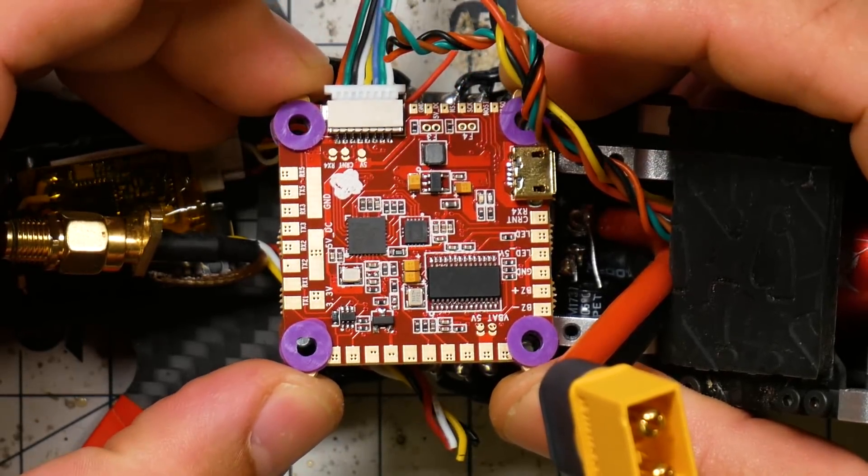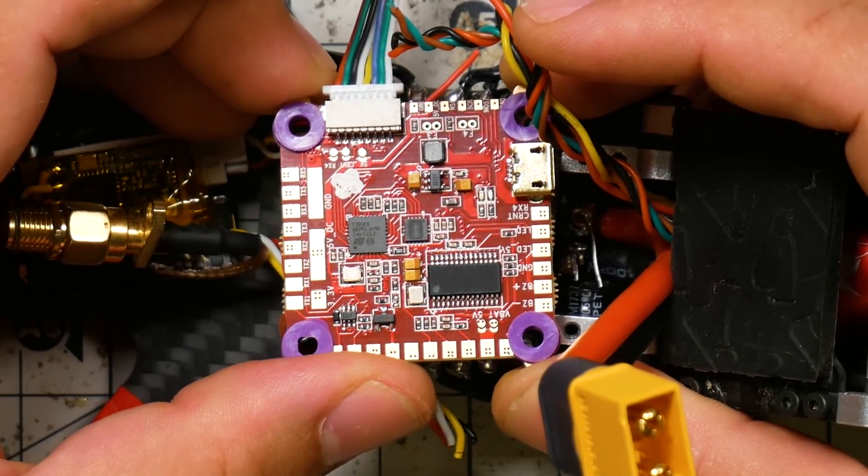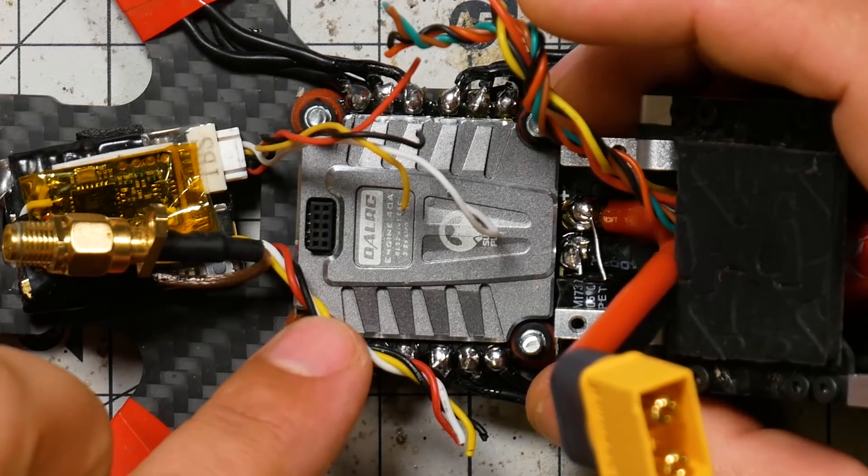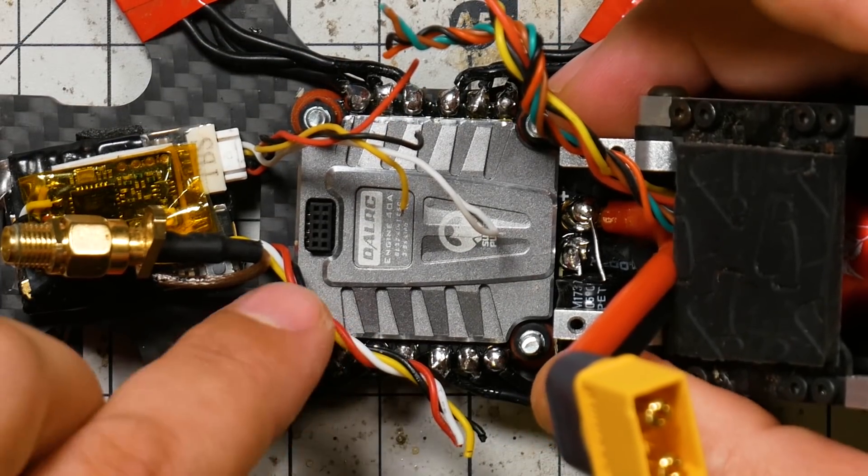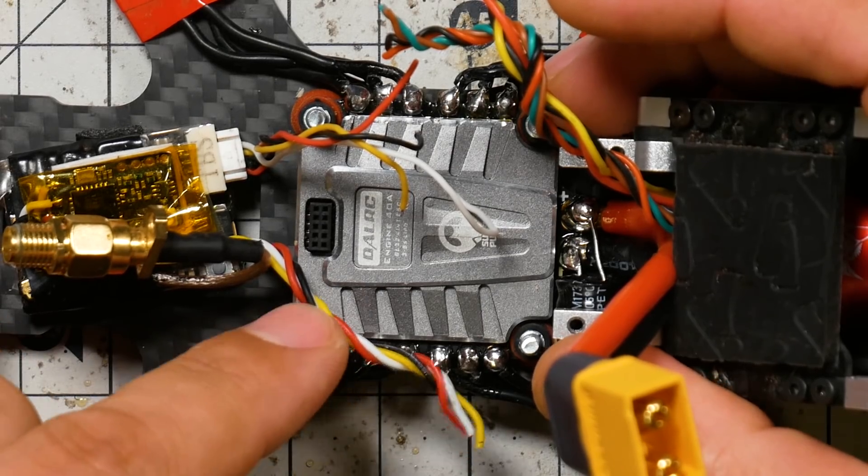Today, I'm going to put this Heliospring flight controller into this quad. And this quad has in it the DALRC Engine ESC. And this is, frankly, one of the best 4-in-1 ESCs you can get today, as long as you only are going up to 5S.